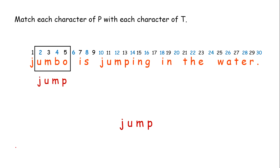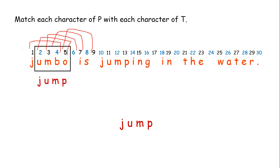Last character: we have to match B and P. B and P are a mismatch. So we move the window to the next 4 characters. We started with index 1 to 4, so next we take 2 to 5, then 3 to 6 — one by one we make a substring and match it. The next substring is 'umbo'. We compare the first characters and see a mismatch.